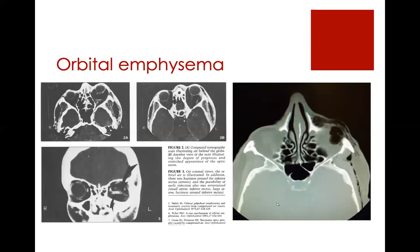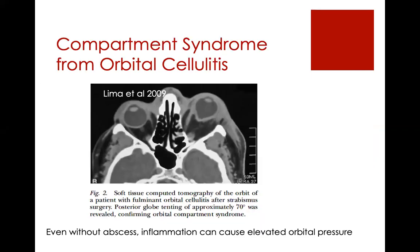There are things other than blood that can cause orbital compartment syndrome. Orbital emphysema can act like a one-way valve where air can get in but not get out, which is why we always tell patients with fractures to sneeze with their mouth open and not blow their nose, because you can suddenly blow a lot of air into the orbit. You can also get compartment syndrome from inflammation alone — from orbital cellulitis, fulminant inflammation can really increase orbital pressure, and this can happen even without an abscess.